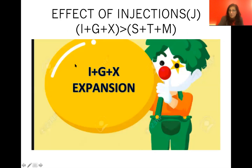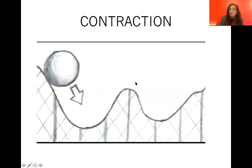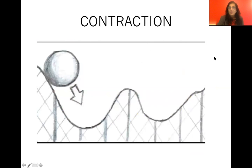To summarize: injections — investment (I), government spending (G), and exports (X) — lead to expansion. If injections exceed withdrawals, the economy expands in an upswing. If withdrawals exceed injections, the economy contracts in a downswing. That covers circular flow, GDP, and business cycles. Nobody wants a non-stop bumpy roller coaster ride, which is why business cycles need to be smoothed out — and that's where government policy and the reserve bank's role come into play.